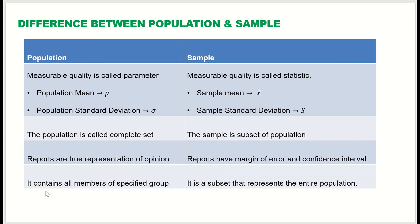The last difference: the population contains all members of a specified group, whereas the sample is a subset but it represents the entire population. So it's a subset but representative. These are the differences between population and sample.